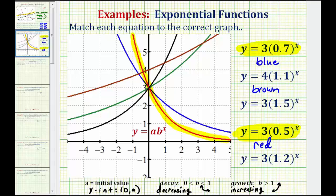Again, the smaller the value of b, or the closer b is to zero, the faster it would decrease. That leaves us with two other equations to match: one where b is equal to 1.5 and one where b is equal to 1.2. Both values of b are greater than one, which means both will be exponential growth.